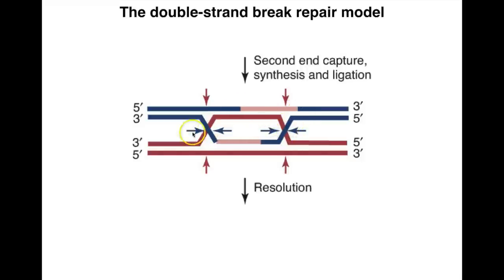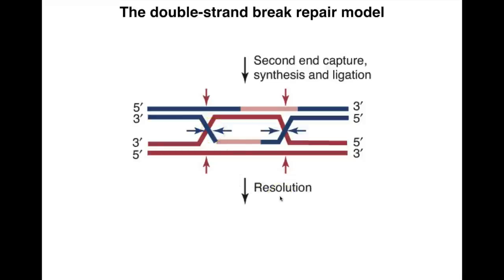Then we have capture of the second end — the D-loop gets captured by homology within the original strand. The second 3' overhang is recognized and captured by the D-loop, which is then used as a template to fill in the other strand. We wind up with two Holliday junctions that need to be resolved. The resolution of the Holliday junctions results in either double-strand break repair without crossing over — red and red, blue and blue — or with crossing over, depending on north-south versus east-west resolution, giving us blue and red, and red and blue.